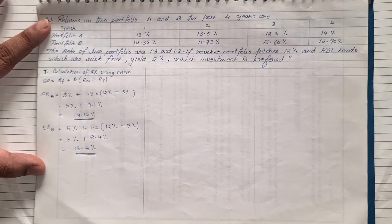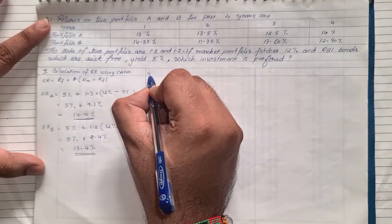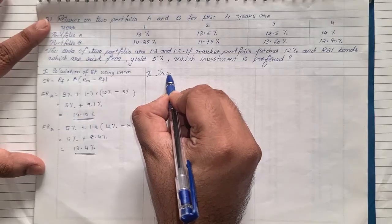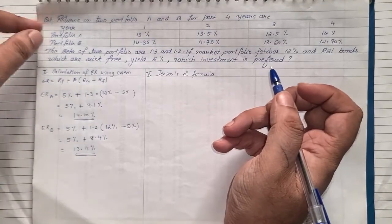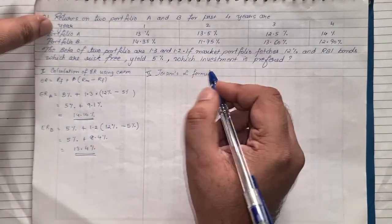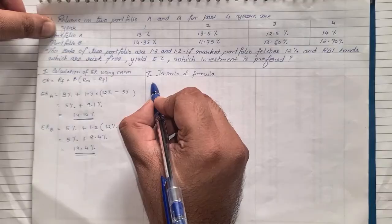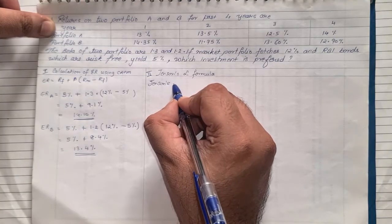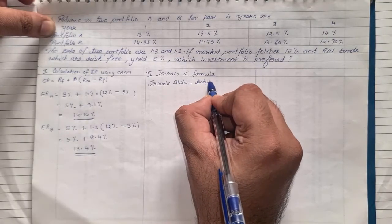We now have the expected return for both A and B — that completes step one. Step two involves using Jensen's alpha formula. Jensen's alpha is equal to the actual return minus the expected return.